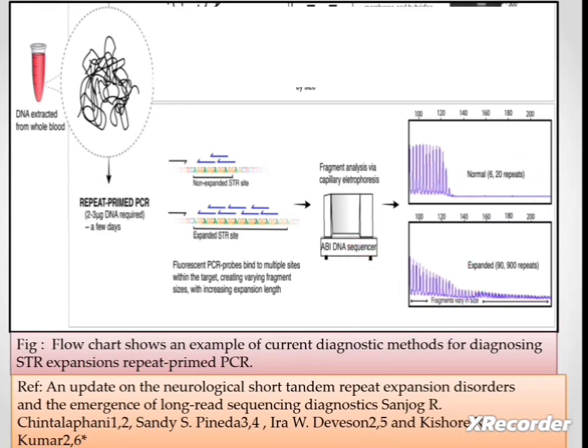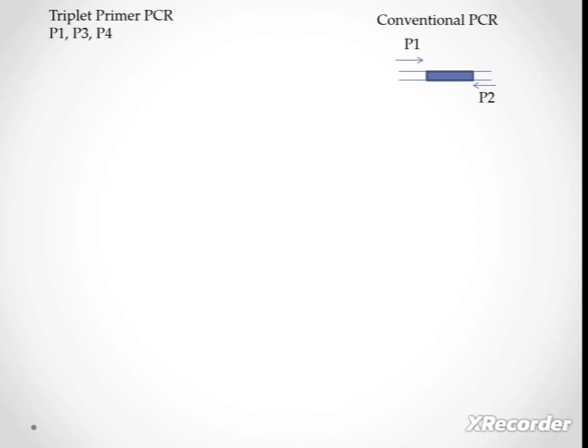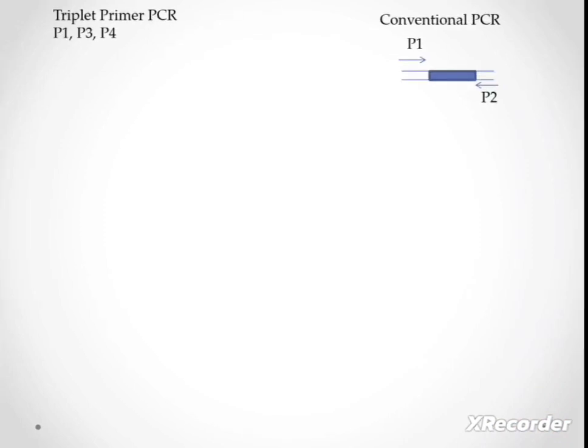Now let us discuss what is the difference between conventional PCR and triplet primed PCR that helps to solve the problem of conventional PCR, which fails to amplify the larger allele. In conventional PCR, two primers were used, P1 and P2, that both bind outside the gene of interest. Whereas in triplet primed PCR, three primers were used: P1, P3, and P4. P1 in both triplet primed PCR and conventional PCR was common.